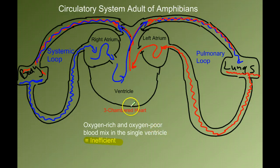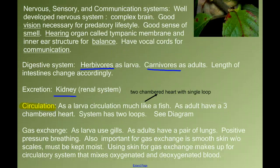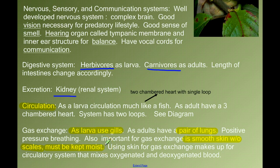So what makes up for this inefficiency? To answer that, we need to look at gas exchange. As larvae, amphibians use their gills for gas exchange. But as adults, they have a pair of lungs and engage in what's called positive pressure breathing. In addition to their lungs — and this is very important — they have additional gas exchange across their smooth skin. Their skin does not have scales, it must be kept moist, and it acts as a secondary gas exchange surface that makes up for the inefficiency of the circulatory system.